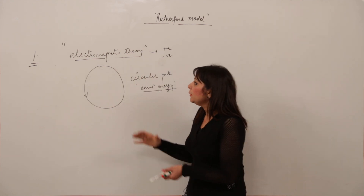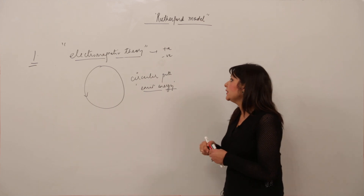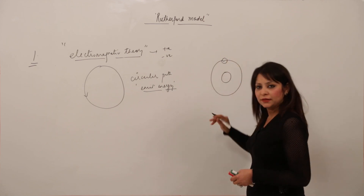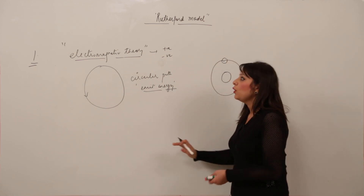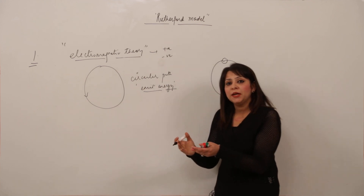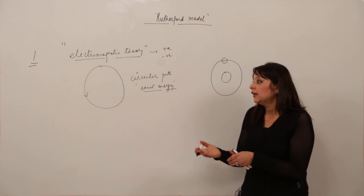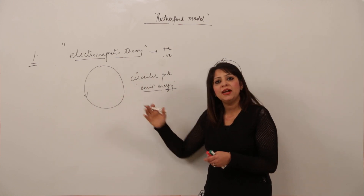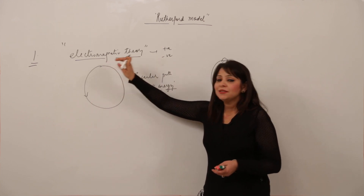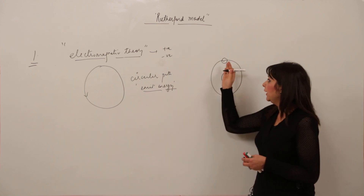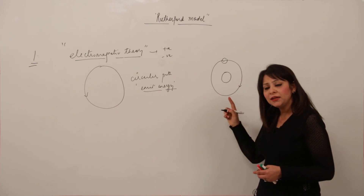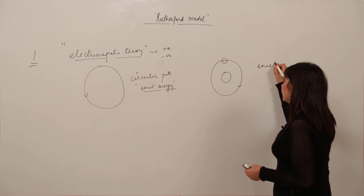Now if we apply this theory to the Rutherford model of an atom — which states that there is a nucleus at the center and the negatively charged particle is revolving around the nucleus — since electromagnetic theory applies to all charged particles, the negatively charged electron in Rutherford's model should also obey this theory. Since it is revolving in a circular path, it should also emit energy.